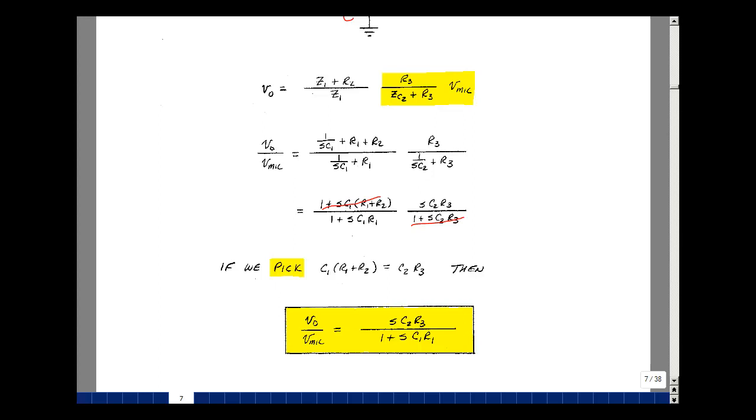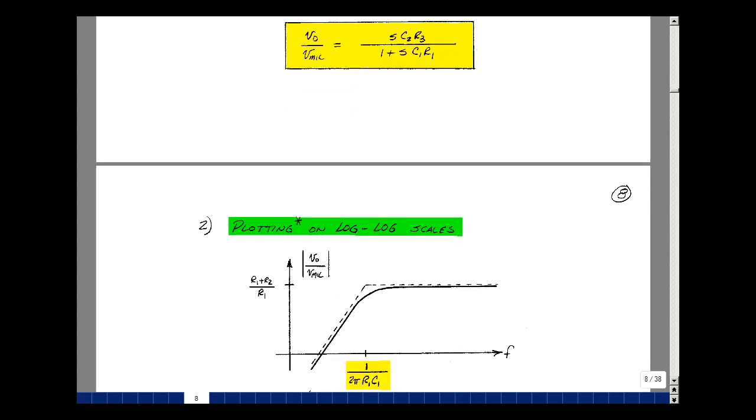When the frequency is high enough, the numerator is just this, but the denominator is dominated by this term because S equals j omega, and as omega is getting larger, it's much greater than 1. So you get just this term divided by this term, and the S's cancel and you approach a constant. As frequencies get lower, this becomes small compared to 1, and we just have j omega times C2R3. As frequency gets lower, this voltage transfer function gets smaller. So we block low frequencies and pass higher frequencies.